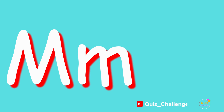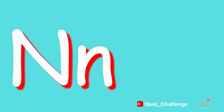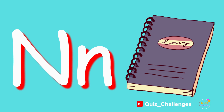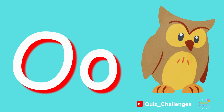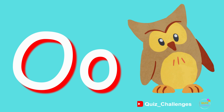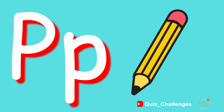M. M is for Mouse. N. N is for Notebook. O. O is for Owl. P. P is for Pencil.